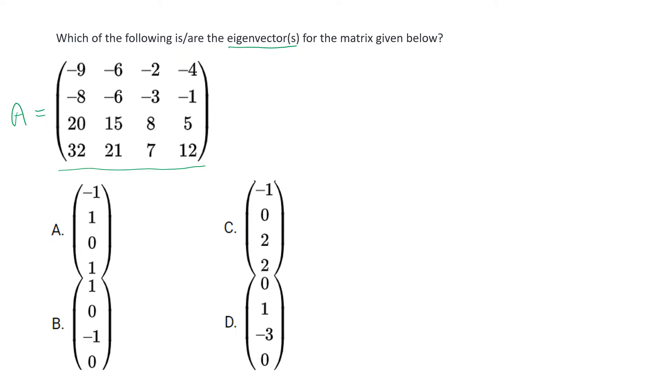Now we know that this will be an MSQ type question because there can be multiple eigenvectors for a matrix. How do we find those eigenvectors? We can use a simple property: A into x equals lambda x. This means if A is our matrix and x is its eigenvector, then their product would give us some constant lambda times x.